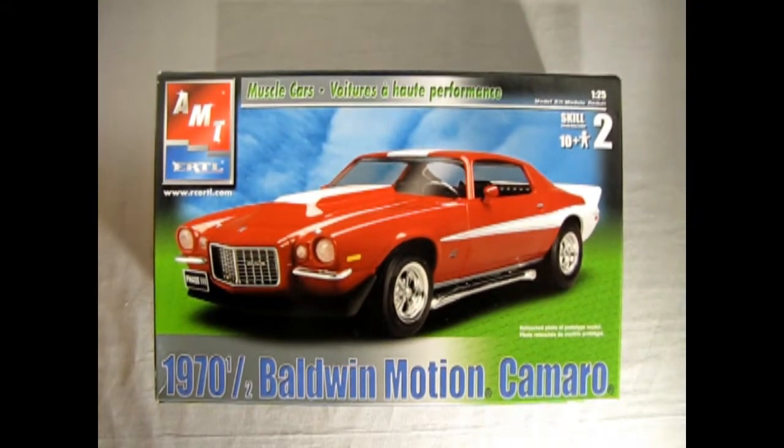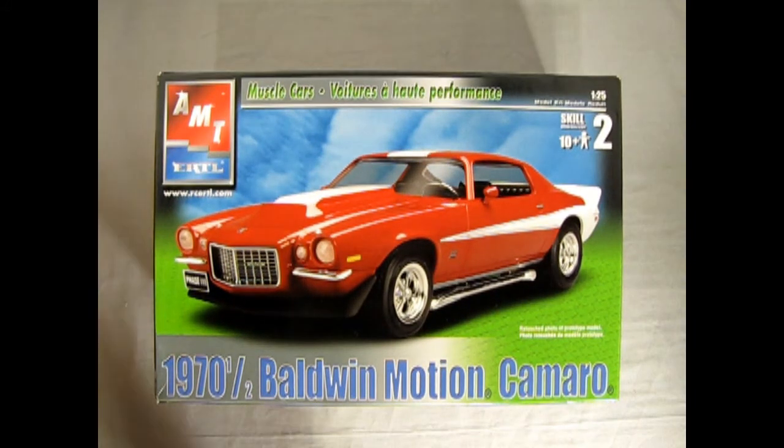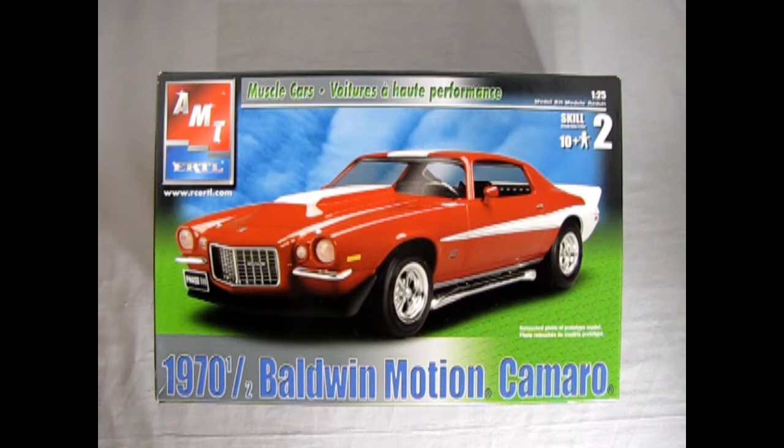And now we wind the clock all the way back to 1970 1/2 with this Baldwin Motion Camaro. So in case you're wondering, this whole 1970 1/2 basically means that this car would have come out in September of 1969. But there might have been some production delays or something else. So instead of it coming out in September, they released these cars in April of the following year. So that's the half, because it comes out six months after the original release date.